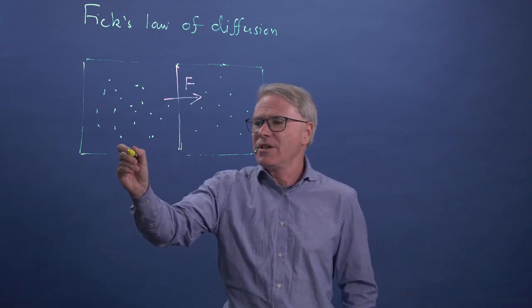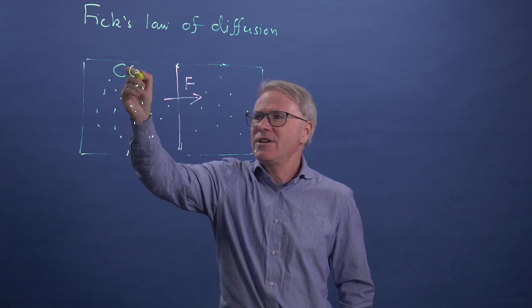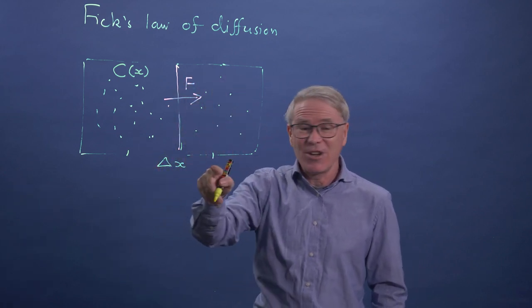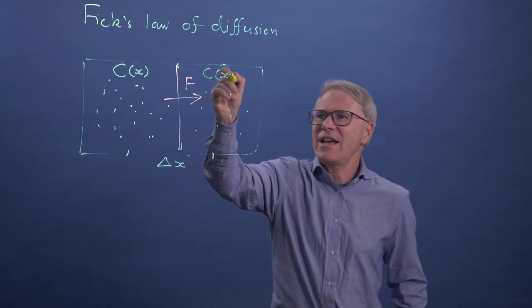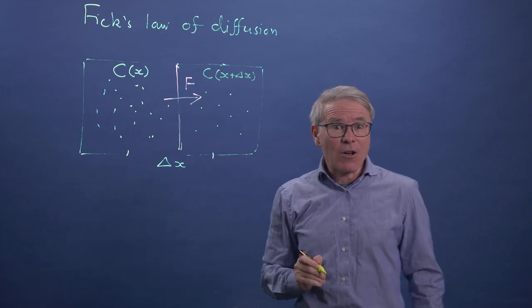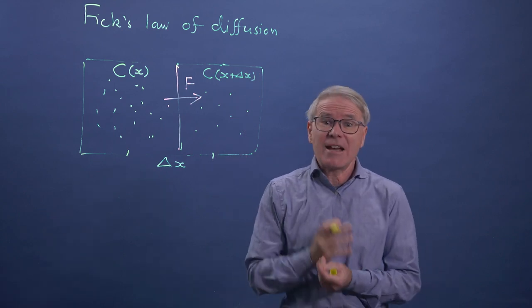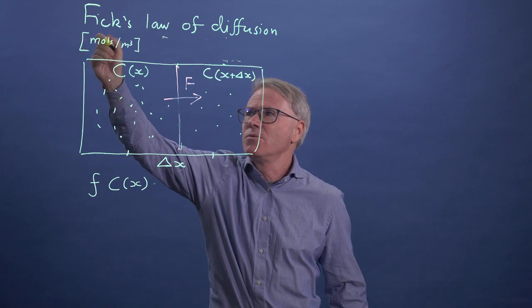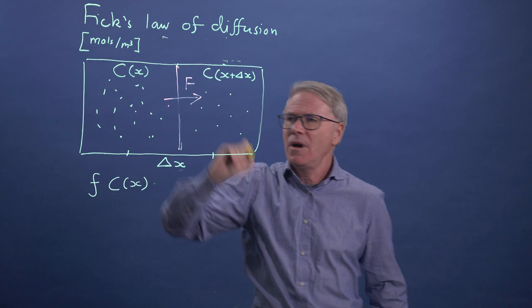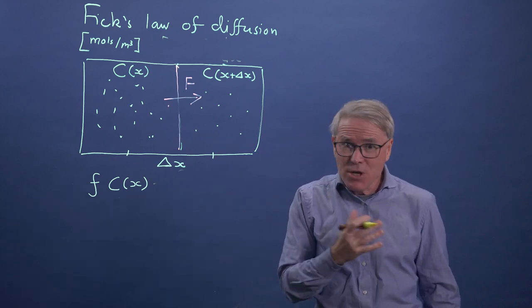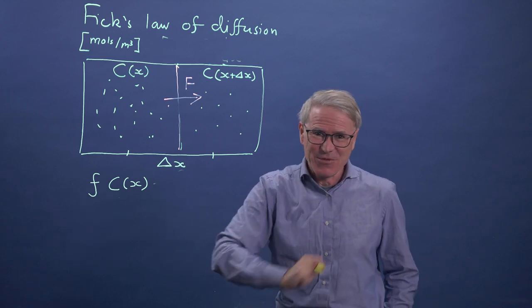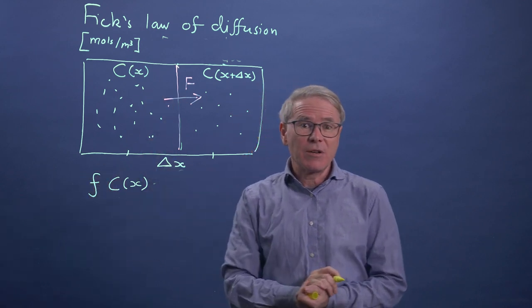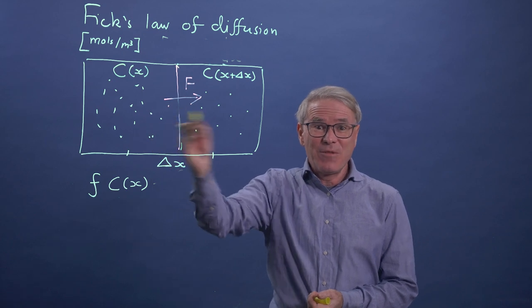Now let's try and make this a little bit more mathematical. Let's call the concentration here C at location X. And then let's imagine that the average here, some location delta X away is C at location X plus delta X. And that concentration we're going to measure actually in numbers of particles per unit volume. So the units of C will be moles per cubic metre. So imagine in some unit time, and that time could be measured in seconds, for instance,